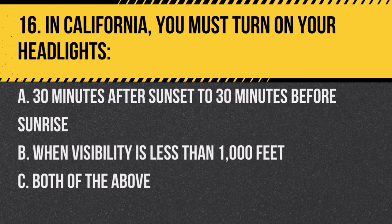Question 16. In California, you must turn on your headlights: a. 30 minutes after sunset to 30 minutes before sunrise. b. When visibility is less than 1,000 feet. c. Both of the above. Answer: c. Both of the above. California law requires headlights during these times and conditions.